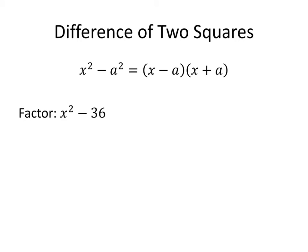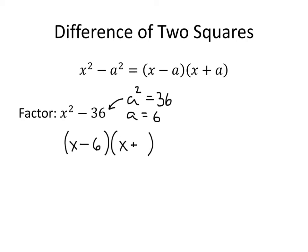Another common factoring trick is the difference of two squares. If we ever see something like x squared minus a squared, we can factor that as x minus a, times x plus a. In this example, we have x squared minus 36, so a squared is 36, meaning a is 6. That means this factors as x minus 6, times x plus 6. This is a quick way to factor expressions in this form.